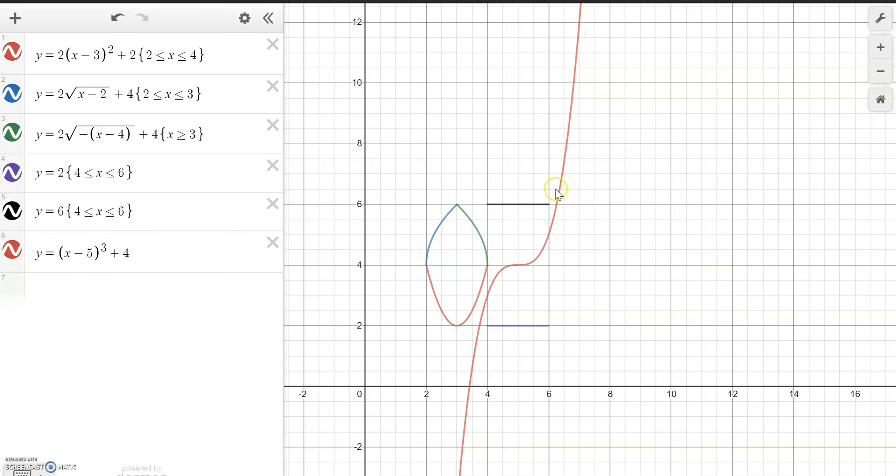And it doesn't connect but we can stretch it and force it to connect. Oh look it worked. That's pretty cool. And we are going to constrain it. We want to constrain the exact same spot. So from 4 to 6 and now we have our Z.